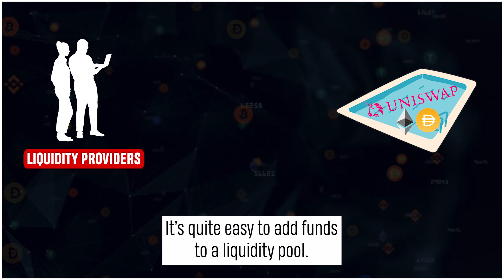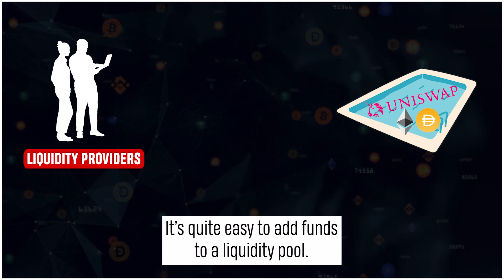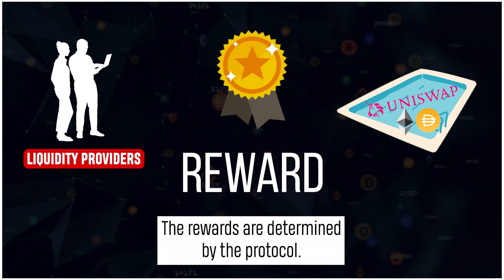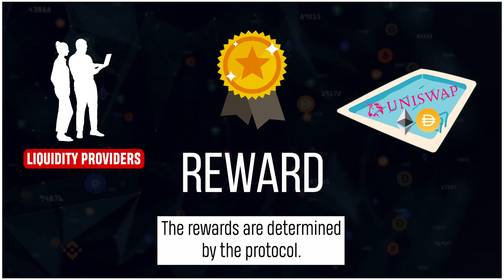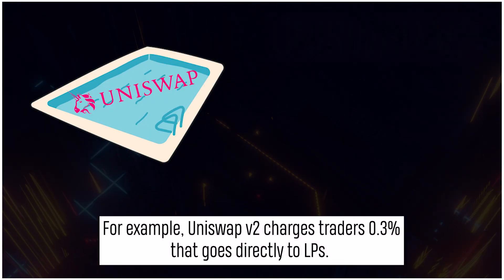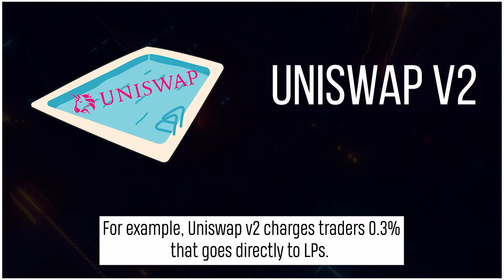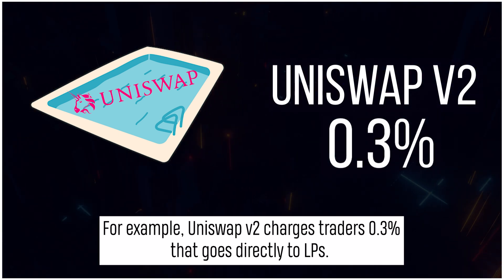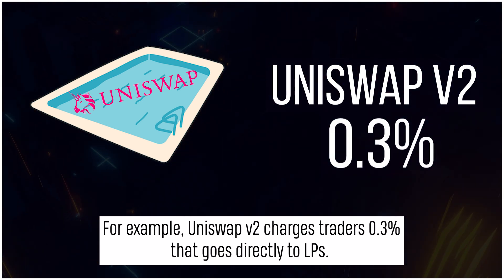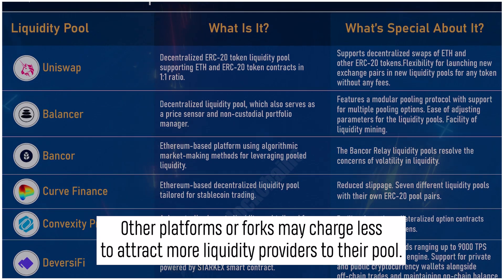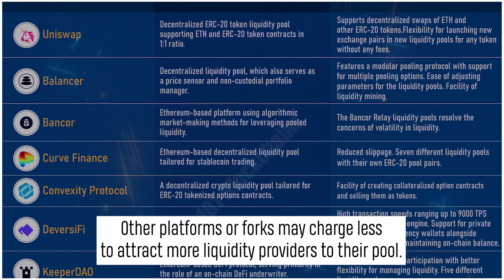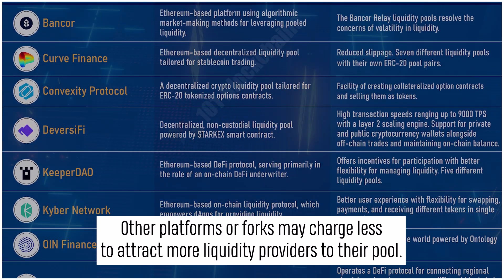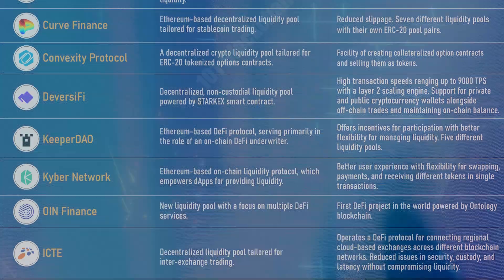It is quite easy to add funds to a liquidity pool. The rewards are determined by the protocol. For example, Uniswap charges traders 0.3% that goes directly to liquidity providers. Other platforms or forks may charge less to attract more liquidity providers to their pool.